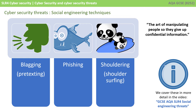The first is social engineering. The three social engineering threats and techniques you need to know about are blagging, phishing and shouldering. We will list the three here but we have a separate specific video coming up later on social engineering threats. In essence, social engineering is simply the art of manipulating people so they give up confidential information.